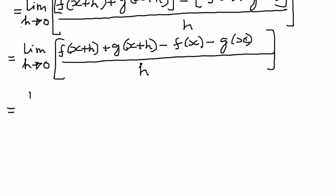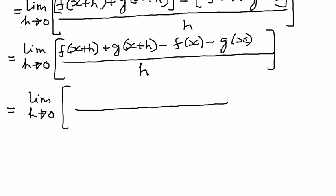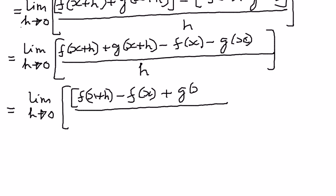So, limit as h approaches zero — I can combine the numerator terms selectively as follows: f of x plus h minus f of x, plus g of x plus h minus g of x.